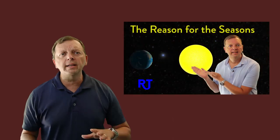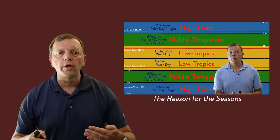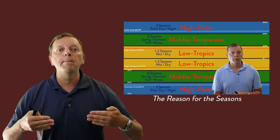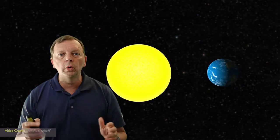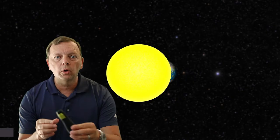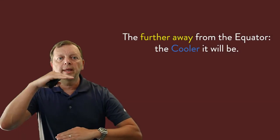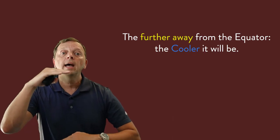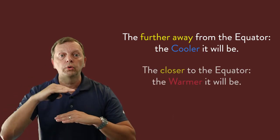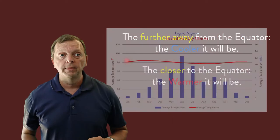In fact, we just had an entire lesson that discusses how the seasons of the earth are different based upon latitude. This is, of course, due to the tilt of the earth and the earth's revolution around the sun. As we learned, the further away from the equator you are, the cooler you're going to be, and the closer to the equator you are, the warmer you're going to be.